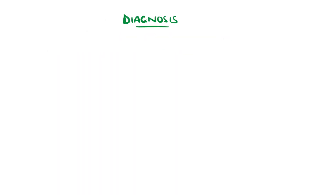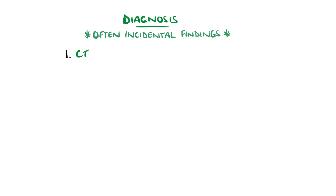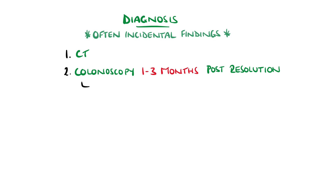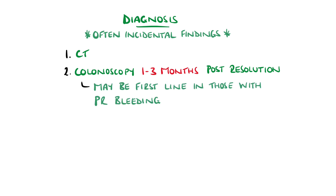Diagnosis of colonic diverticula is often made as an incidental finding on colonoscopy or CT done for other reasons. But in symptomatic patients, CT is generally the modality of investigation. Colonoscopy is recommended 1-3 months after resolution of an episode of diverticulitis to assess for colorectal cancer. For those presenting with bleeding, a colonoscopy is generally the first line; however, CT angiography is another option.